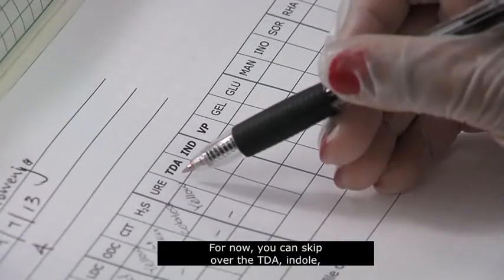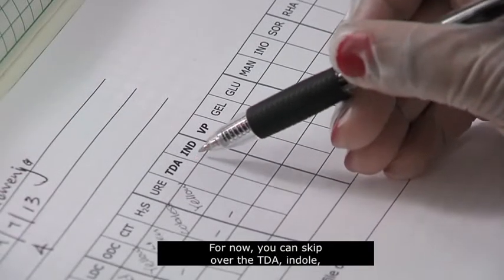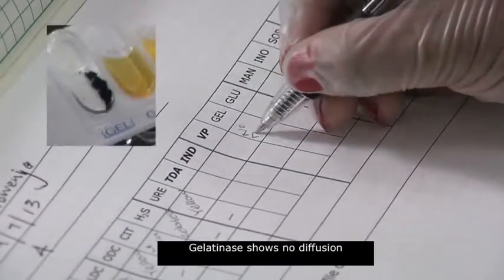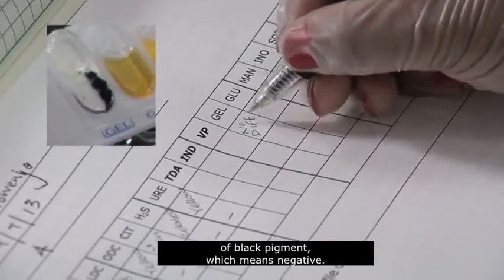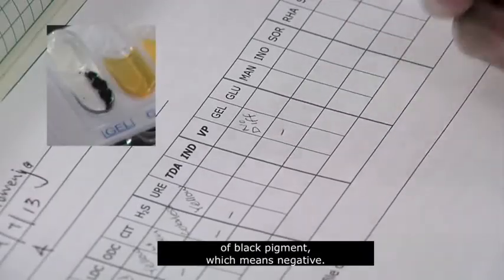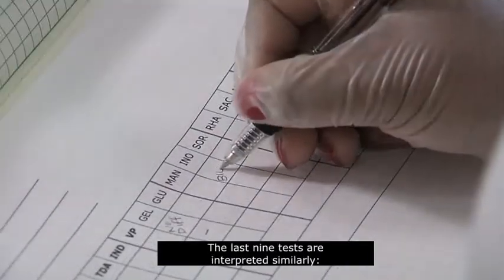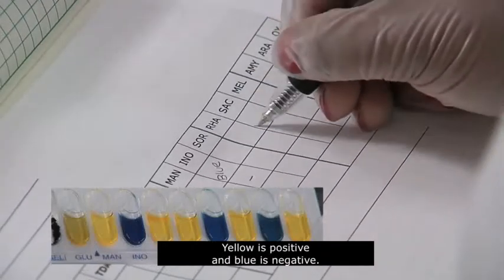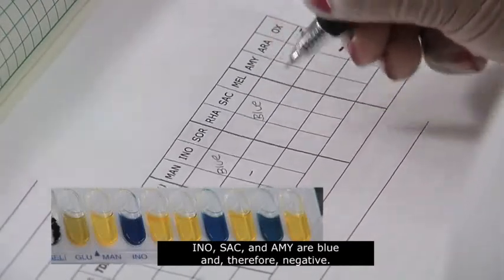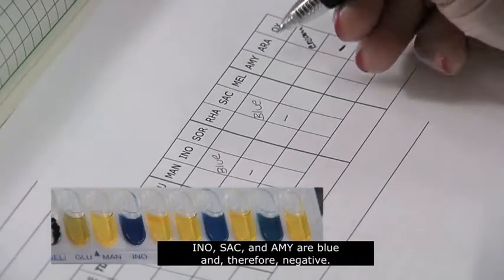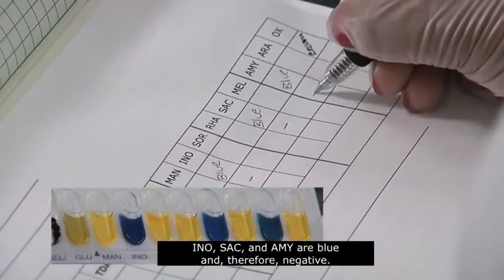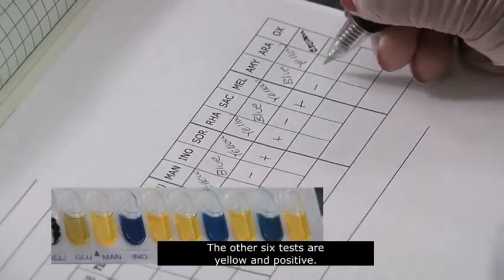For now, you can skip over the TDA, Indole, and Vogue-Proskauer tests. Gelatinase shows no diffusion of black pigment, which means negative. The last nine tests are interpreted similarly. Yellow is positive, and blue is negative. INO, SAC, and AMY are blue and, therefore, negative. The other six tests are yellow and positive.